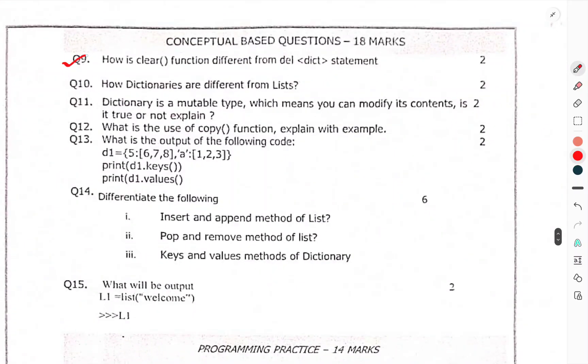Conceptual based question, 18 marks. How is clear function different from the delete statement? How are dictionaries different from list? How dictionary is mutable type, which means you can modify contents, is true or not? Explain. What is use of copy function? Explain with example.